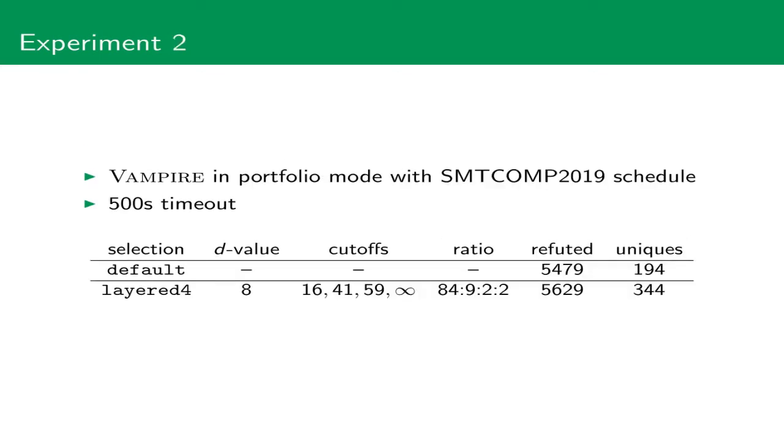As second experiment, we ran Vampire in portfolio mode with a 500-second timeout. We compared the default clause selection heuristic to the best instantiation of our framework from the last experiment. What we can see here is that we improved the existing portfolio mode by solving 150 additional problems. In particular, we also solved 344 problems which the portfolio mode couldn't solve before. One can imagine that incorporating our heuristics already during training the portfolio mode would further improve the results.